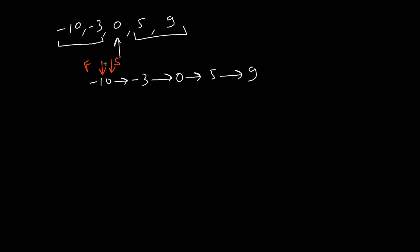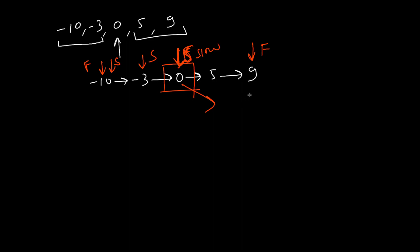We traverse until the fast pointer reaches the end of the linked list. After the first traversal, the fast pointer moves two positions and the slow pointer moves one. After the second traversal, the fast pointer advances again. When the fast pointer reaches the end, the slow pointer will be at the middle element of the linked list. We make this the root of our binary search tree, then similarly use recursion to find the middle of the left and right sides of the linked list.